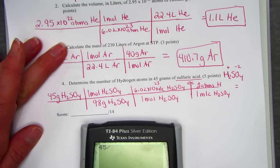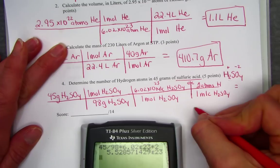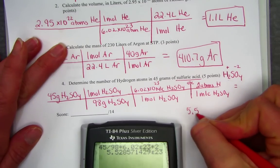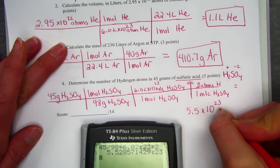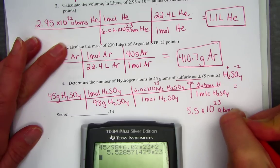45 divided by 98 times Avogadro times 2. I find 5.5 times 10 to the 23rd atoms of hydrogen.